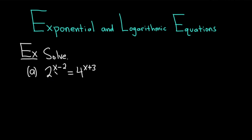Part A, we have 2 to the x minus 2 equals 4 to the x plus 3. Let's work this one out. The idea is when you see a problem like this, you want to think about whether or not you can write it using the same base. Because we have a base of 2 on the left-hand side, we should think: how can we write 4 as a power of 2? Well, 2 squared is equal to 4. So let's go ahead and do that in our first step.